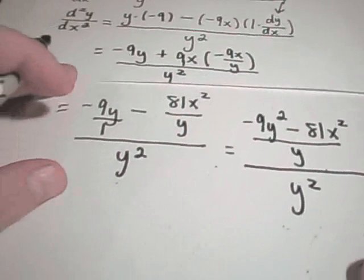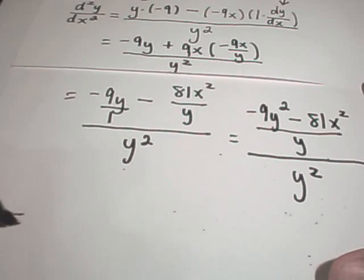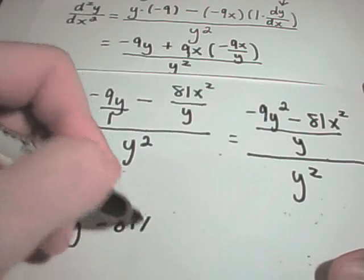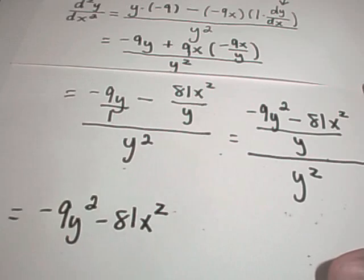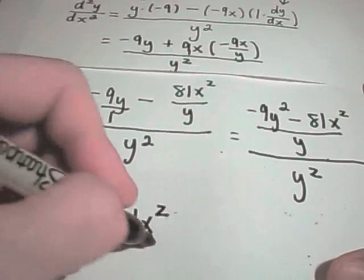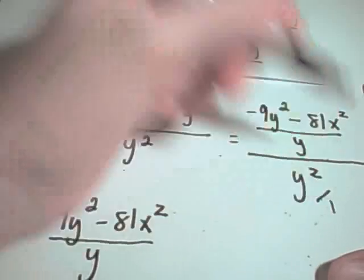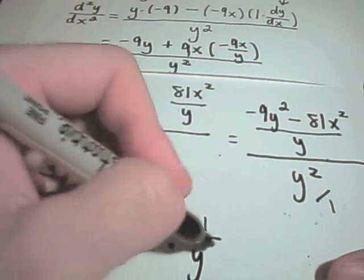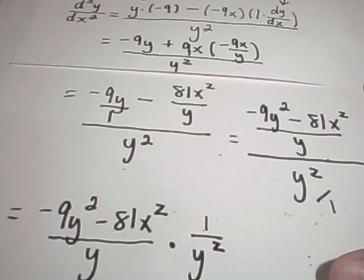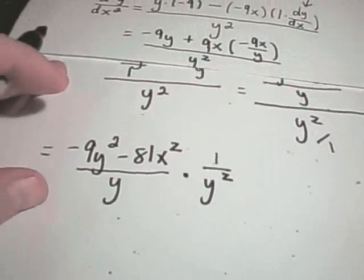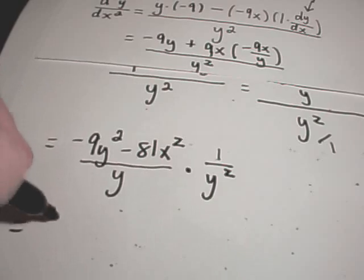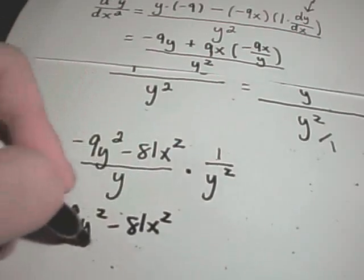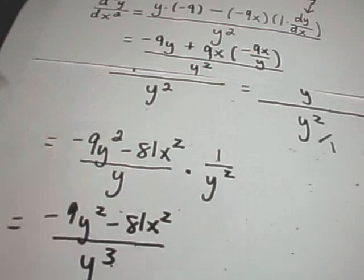And so let's keep cleaning this up a little bit. So we have negative 9y squared minus 81x squared. And we're dividing that by y, and we've got y squared over 1. So we can actually flip and multiply and make that 1 over y squared to, again, kind of reduce our fractions here a little bit. So that's going to give me negative 9y squared minus 81x squared all over y to the third power.